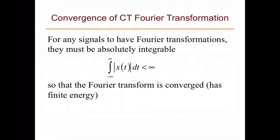One requirement of the continuous time Fourier transform is that for any signal to have a Fourier transform, it must be absolutely integrable. Meaning that if you integrate for all time the amplitude of the signal, that integration must be less than infinity, so that you would be able to determine the frequency components through the analysis equation.